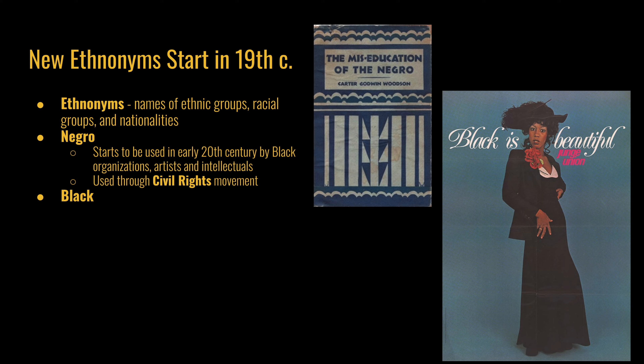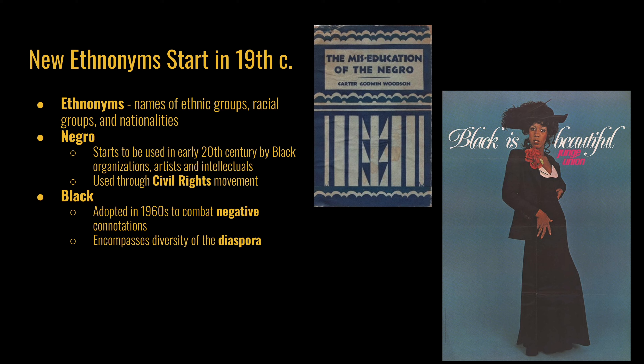In the 1960s, the term black was adopted to combat negative connotations. Phrases like black is beautiful and black power emerged as examples of this new terminology. This term encompassed the diversity of the diaspora because it referred to skin color and race, tying people together without being specific about geographic origin. The black power movement was significantly influenced by leaders like Malcolm X and organizations like the Black Panther Party, founded in 1966.